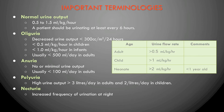Oliguria — 'olig' means less, 'uria' means urine — is reduced urine output. It is defined as less than 300 ml per meter squared of body surface area in 24 hours. For children, it is less than 0.5 ml/kg, and for infants, less than 1 ml/kg. Generally, if an adult excretes less than 500 ml of urine per day, it is considered oliguria.